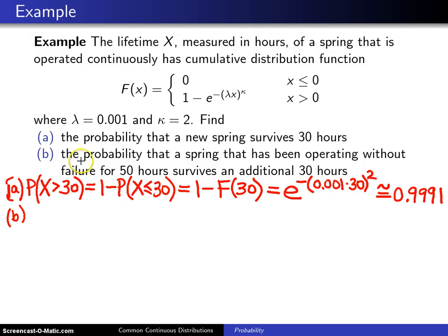Now part B here says, want the probability that a spring that has been operating without failure for 50 hours survives an additional 30 hours. So the way that can be written is, we have a conditional probability here.